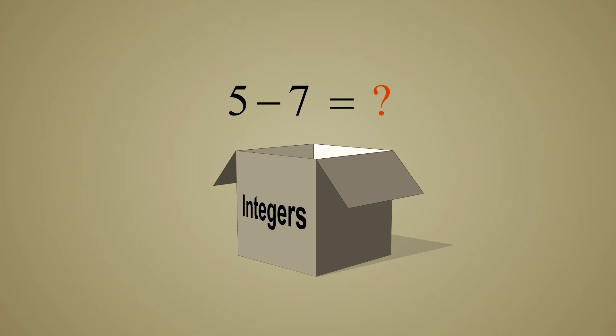No matter how we add or subtract integers the result can always be represented by some integer. Therefore, integers are closed under both addition and subtraction.